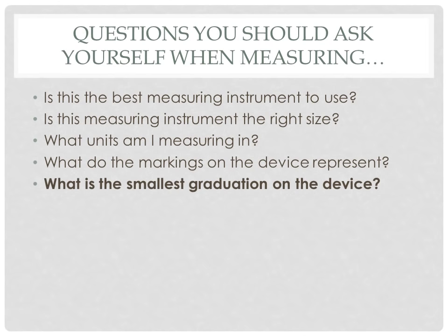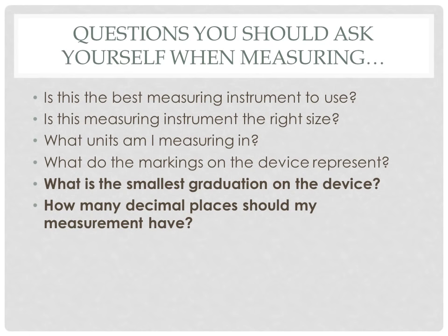The two most important questions: What is the smallest graduation on the device — the smallest markings, how big is the increment between them? Is it every whole centimeter, every tenth of a degree Celsius, or maybe every 100 milliliters? And from that answer you should be able to answer: how many decimal places should my measurement have? We always estimate to one decimal place beyond the smallest graduation. If a graduated cylinder is marked every 10 milliliters, the next decimal place is the ones place, so we can record a measurement to the ones place.